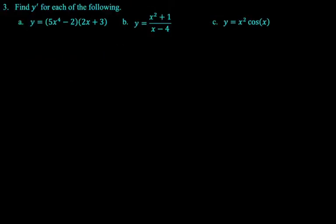Find y prime for each of the following. So we have y equals the quantity 5x to the fourth minus 2 times the quantity 2x plus 3. That's a product rule. Then we have y equals x squared plus 1 over x minus 4. That's going to be a quotient rule. And then we have y equals x squared cosine of x. That's going to be another product rule. So we're doing product, quotient, product. So it's nice to just look at a problem and be like I know what I would do, and then maybe not do it if you're fully confident. But anyway, here goes.